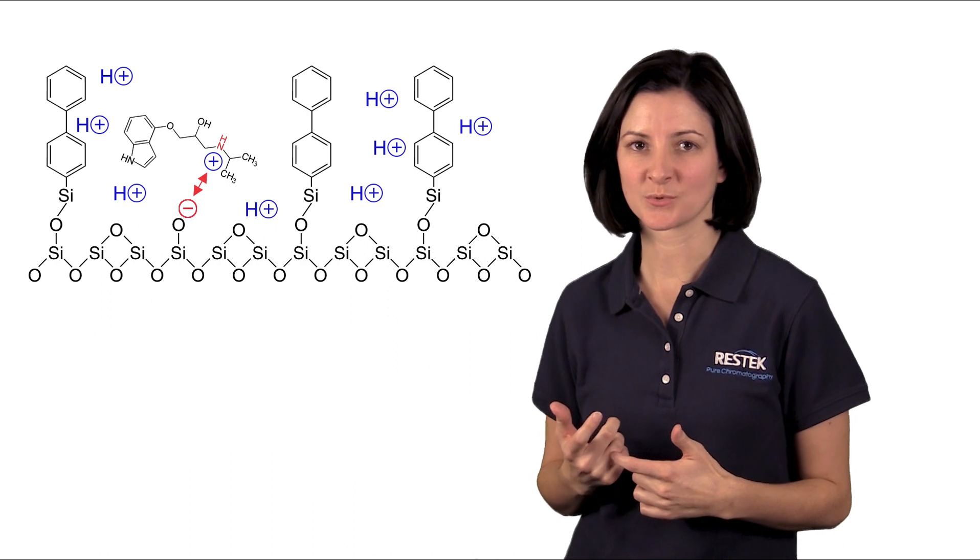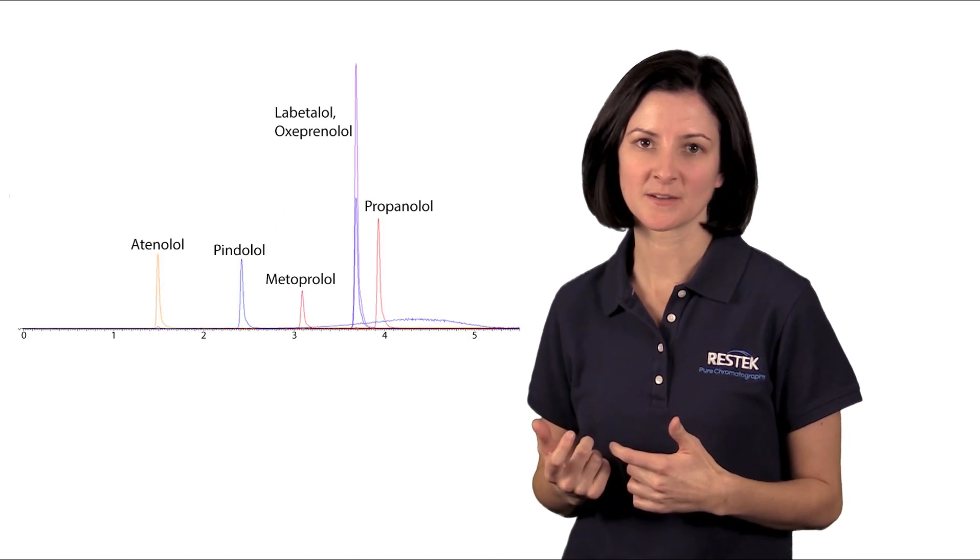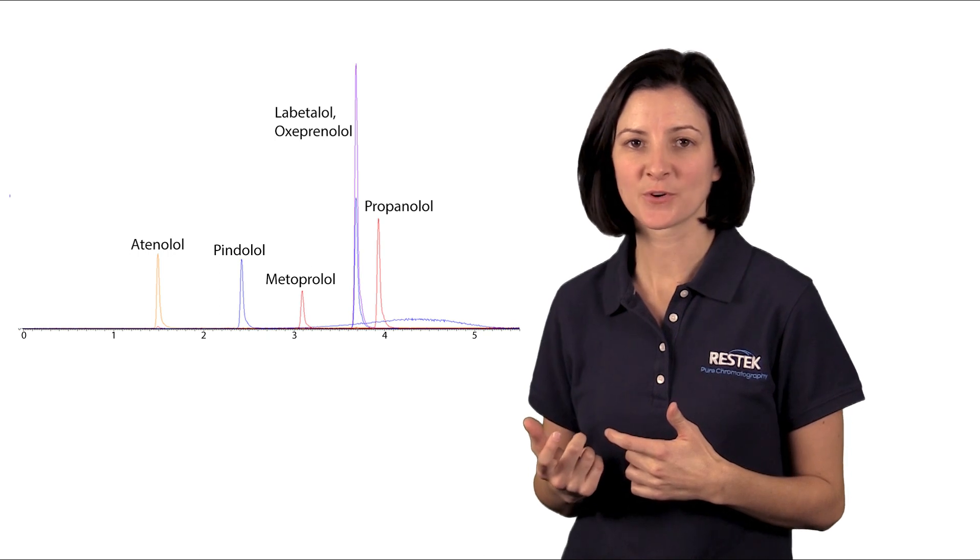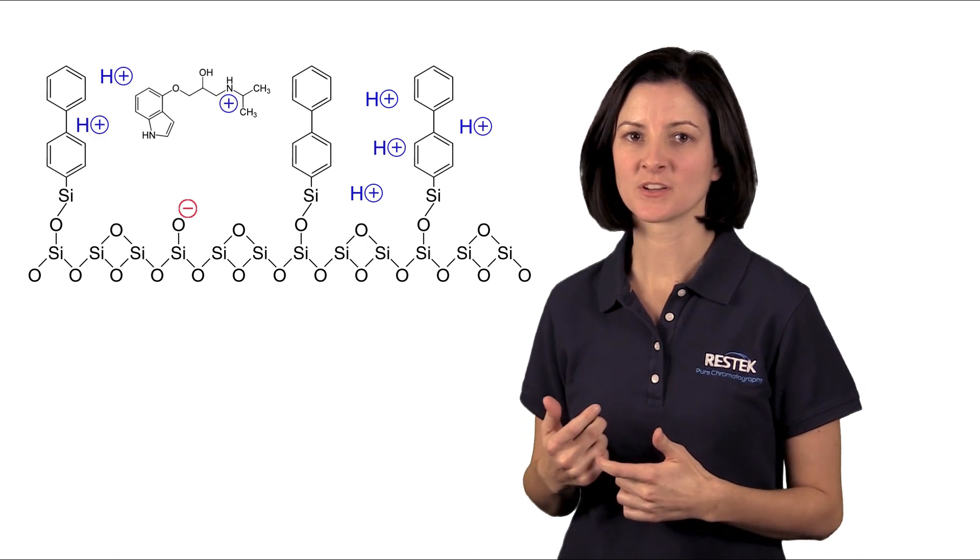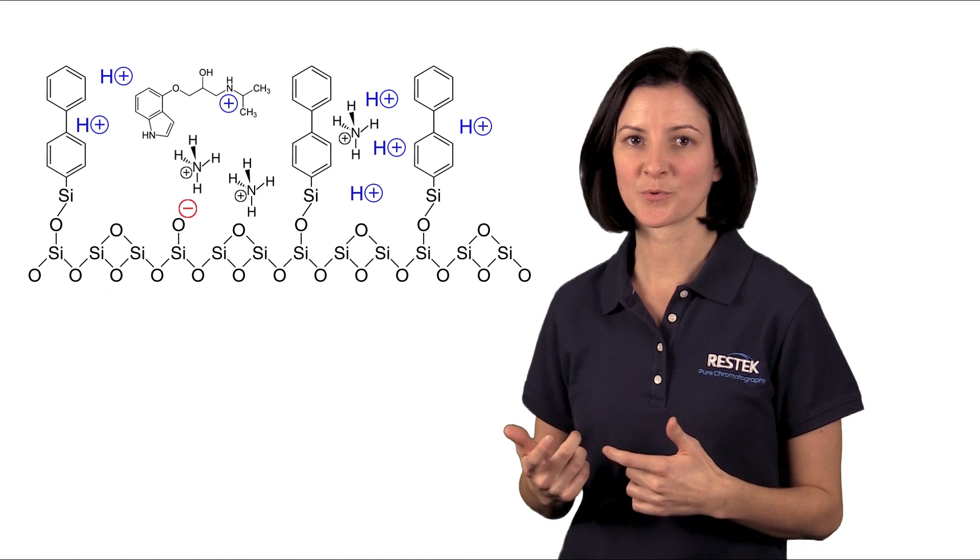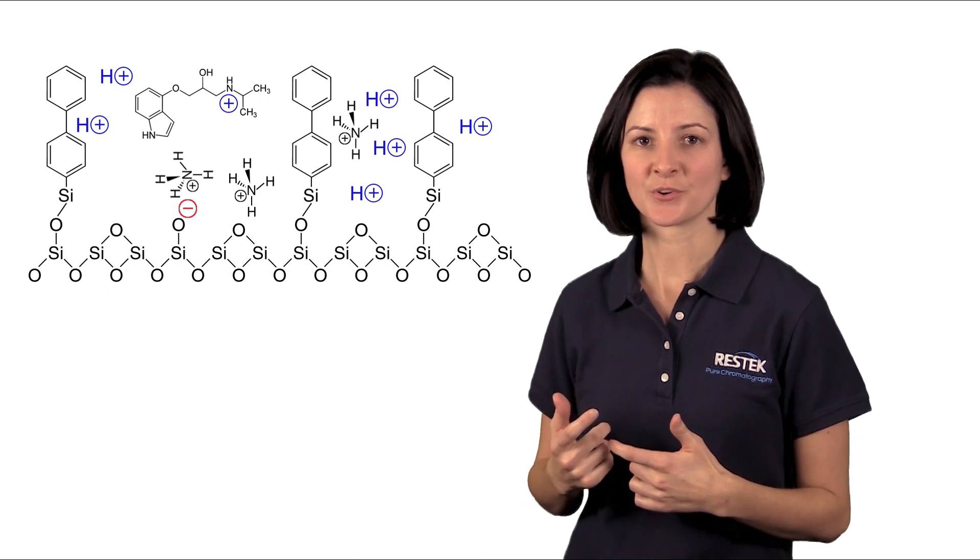That interaction is what's actually creating peak tailing. One way to actually get around this is to add buffer to your mobile phases. In typical LC-MS analysis, we're already adding acid to our aqueous and organic components of our mobile phases. But the addition of complementary salts like ammonium formate to formic acid can really help reduce some of those silanol interactions.